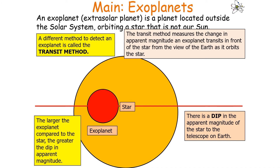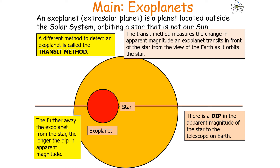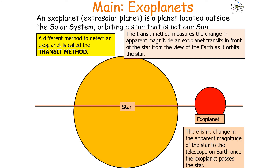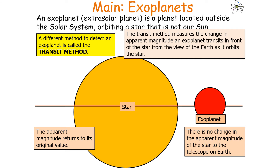The larger the exoplanet compared to the star, the greater the dip in apparent magnitude. The further away the exoplanet from the star, the longer the dip in apparent magnitude, as it takes longer to fully transit across the entire star. Once the exoplanet has passed, there is no change in apparent magnitude, and it returns to its original value.